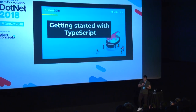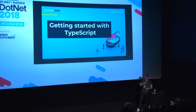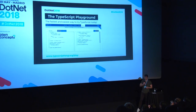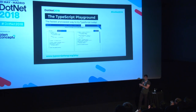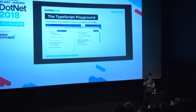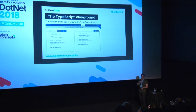The easiest way to get started is to go to typescriptlang.org and use the playground section. On the left side you type TypeScript, and on the right side you see the generated JavaScript. This is the fastest way to try it — you don't need to install anything.